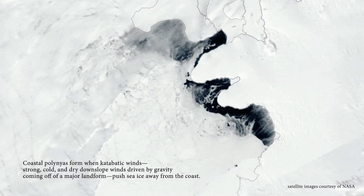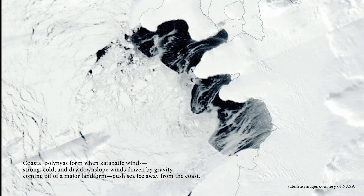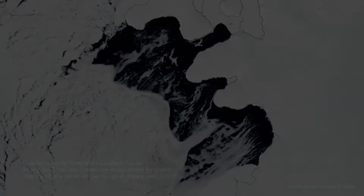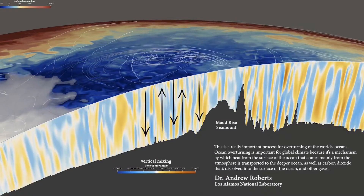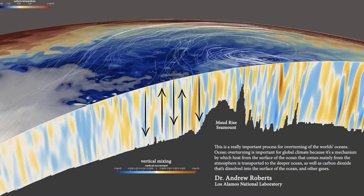Coastal polinias form when katabatic winds — strong, cold, and dry downslope winds driven by gravity coming off of a major landform — push sea ice away from the coast. This is a really important process for overturning of the world's oceans.